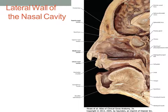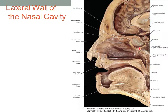Here's another review slide. We can see our three nasal conchae — the superior, the middle, and the inferior — and always below them are the meatuses: the superior, middle, and inferior meatus. The region posteriorly is called the posterior nasal aperture or the choana, which is the transitional region from the nasal cavity to the nasopharynx.